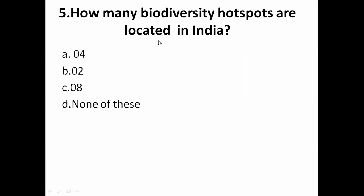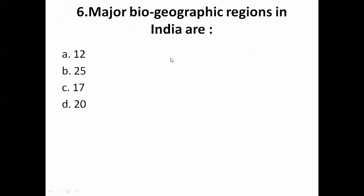How many biodiversity hotspots are located in India? The options are 04, 02, 08, and 20. The correct answer is 04 — there are 4 biodiversity hotspots located in India.